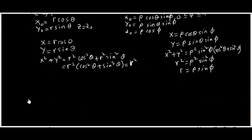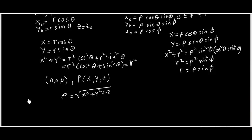Finally, the distance from the origin to point (x, y, z): in spherical coordinates this is rho, and it equals √(x² + y² + z²), which can also be written as √(r² + z²).